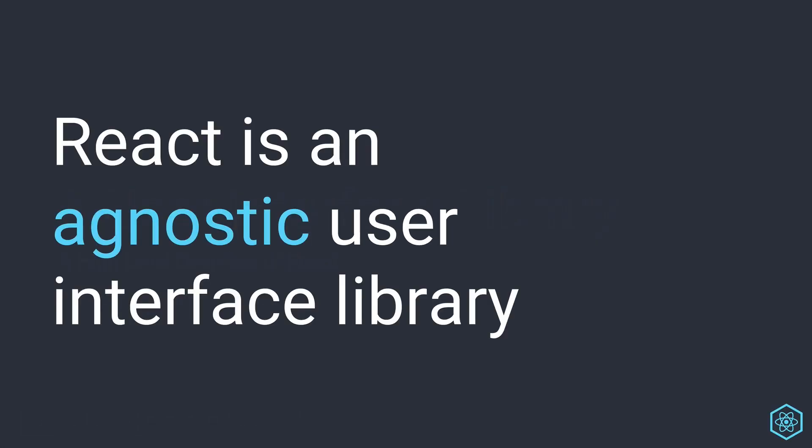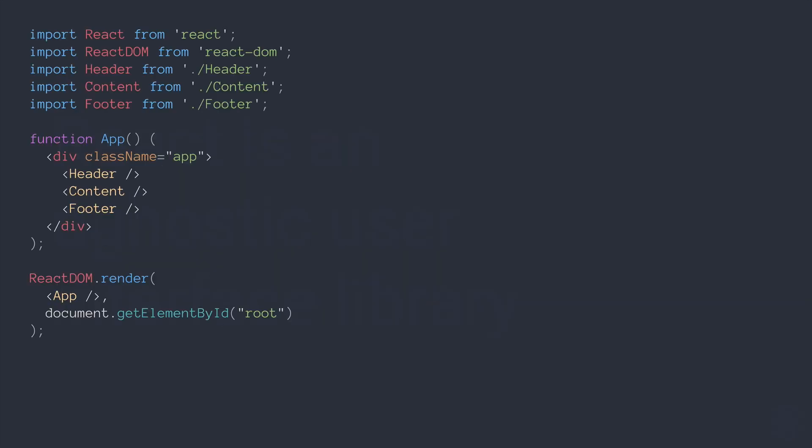React is an agnostic user interface library, and what I mean by agnostic is that it doesn't care where your user interface will ultimately display. We could see here an example of React in combination with React DOM, a separate library that will have React code display in a browser. So we have a function here, our component named App, and we're importing a header, content, and footer component as well. These are also functions in other files, and at the bottom we could see that React passes this component into React DOM to render it to the page — we see good old-fashioned DOM selection here: document.getElementById('root').